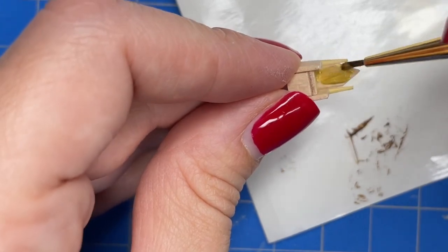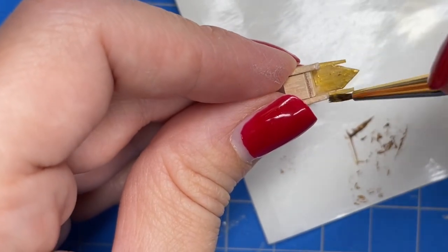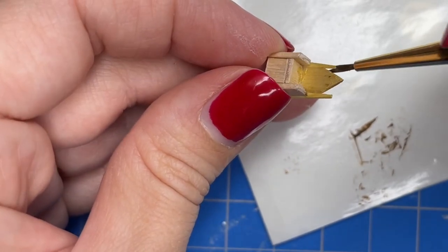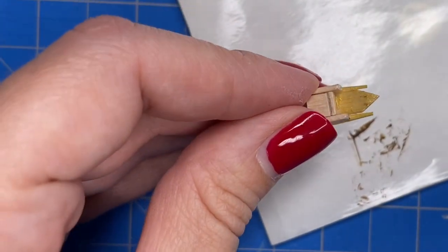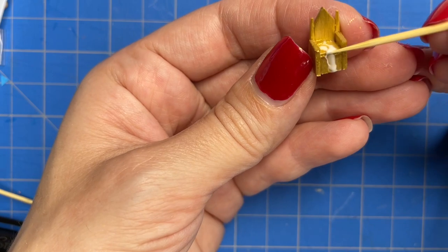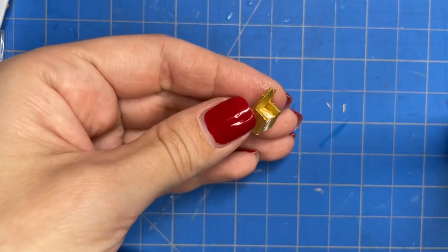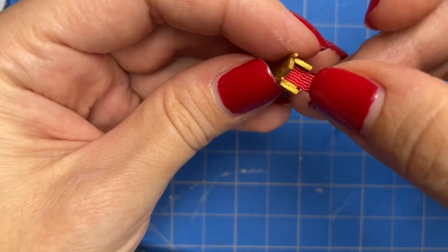I used some gold acrylic paint to paint the entire throne. Once the paint dried I added just a little bit of glue and added some fabric to make the throne just a little bit more comfortable.